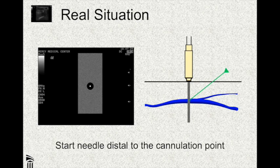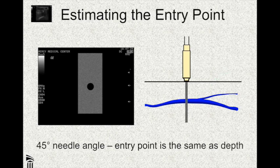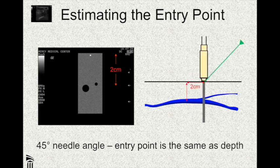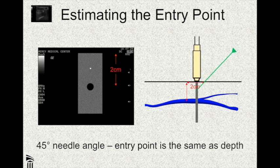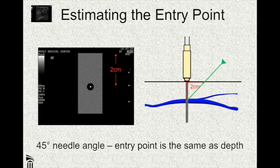How much do you have to back up the needle to do this properly? In real practice you sort of guesstimate, but there is a scientific way. If you see the blood vessel is two centimeters deep, you back up two centimeters, and if you put the needle down at a 45-degree angle, it's going to get you exactly where you want to be. In practice you're going to estimate this with experience. Most blood vessels you're going to want to shoot for will be between one and two centimeters deep, so you back up roughly one or two centimeters.